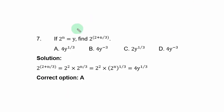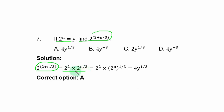Question 7: if 2ⁿ = y, find 2^((2+n)/3). Using the law of indices, split the exponent: 2^((2+n)/3) = 2^(2/3 + n/3). Since adding exponents with the same base means multiplying, we rewrite this as 2^(2/3) × 2^(n/3).